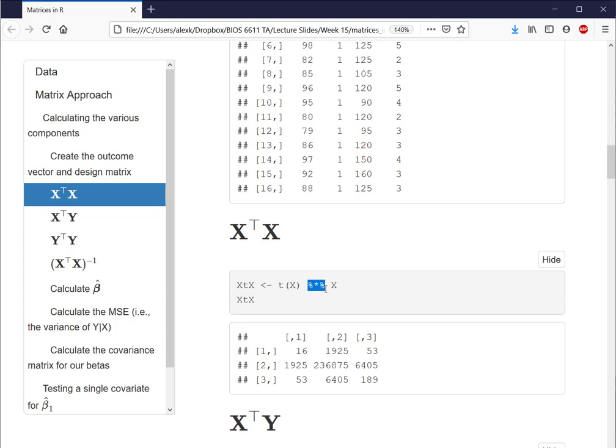Because again we want to multiply them together, not element-wise, but multiply the actual matrices, we use this percent sign, asterisk percent sign, times X. If we print this object here, we see we have a 3 by 3 matrix with the following information.